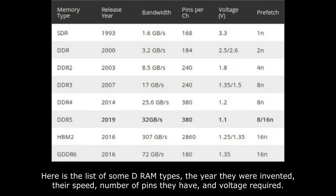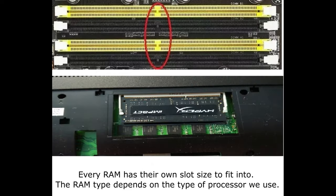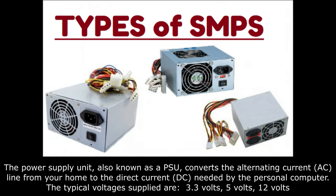Here is the list of some DRAM types, the year they were invented, their speed, number of pins they have, and voltage required. Different RAM come with different pin configurations; the differentiator is the notch position on the RAM. Every RAM has its own slot size to fit into. The RAM type depends on the type of processor we use.